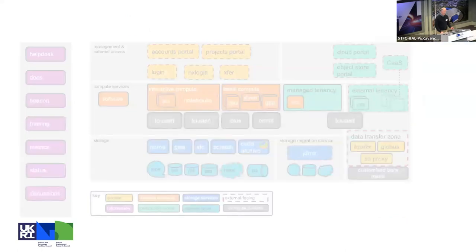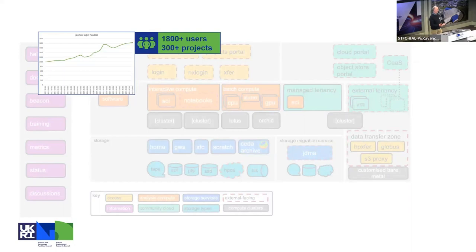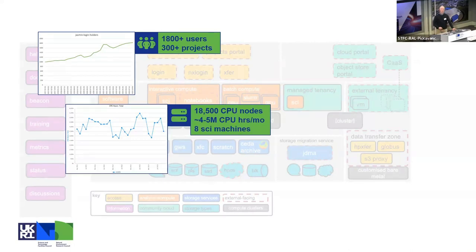Just to put some numbers on things to get a feel for the scale: in terms of number of users, we've been growing steadily and are just over 1,800 users now with around just over 300 projects. In terms of usage of the Lotus cluster, we typically get between 4 and 5 million CPU hours per month. The cluster is around 18,500 cores. We currently have eight SCI machines — the scientific analysis servers — some physical, some virtual, some high memory, for different purposes.